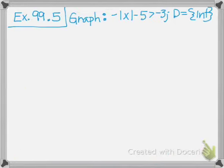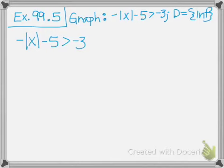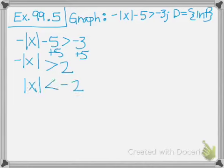Last example: graph negative absolute value of x minus 5 is greater than negative 3, domain is the integers. First, add 5 to both sides to get negative absolute value of x is greater than 2. Divide by negative 1 and flip the sign: the absolute value of x is less than negative 2. This is a case where we have an absolute value less than a negative number — no absolute value can be negative, so therefore there is no solution.